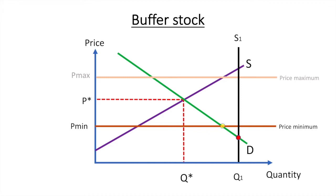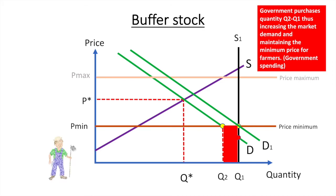Essentially, what the government will do is increase the demand for the product by purchasing the excess supply that exists as demonstrated here by the distance between Q2 and Q1. This increase in demand results in the minimum price being met. Government purchases quantity Q2 to Q1, thus increasing the market demand and maintaining the minimum price for farmers. The government purchases and stores the tomatoes to release during a poor harvest.